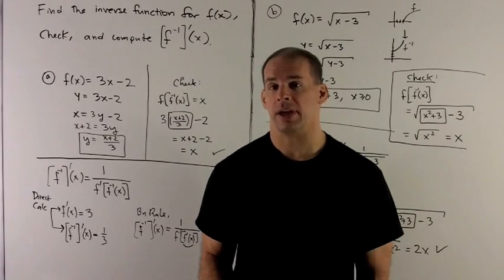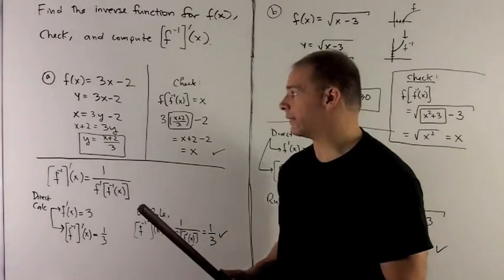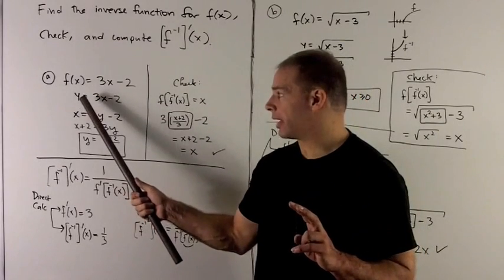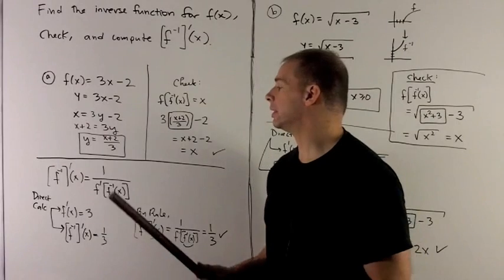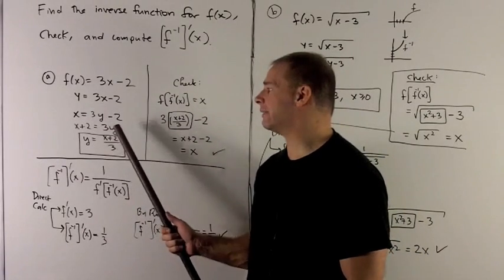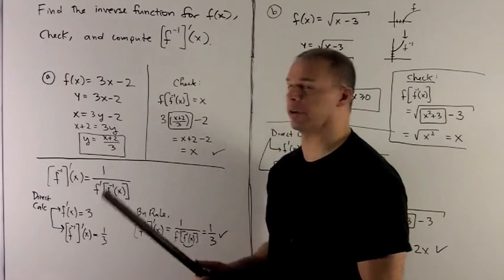We're going to start off with f(x) equal to 3x minus 2. So if I want to find the inverse function, I'm just going to rewrite it f(x) is y, we're going to switch x and y, and then I'm going to solve for y. So when I do this, we're going to push the 2 to the other side, divide by 3, and then I get y equals (x + 2)/3.